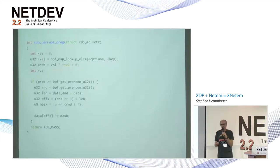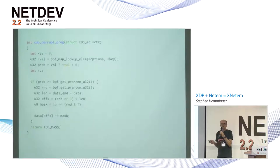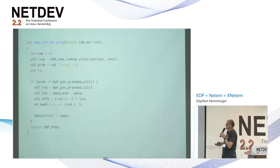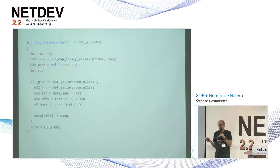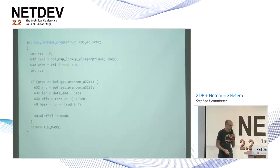How does corrupting work in XNet-EM? Basically, we do the same kind of map lookup to get the probability, and then if the probability is greater than a random value, we choose a bit somewhere in the packet at an offset and flip that bit. The example I was basing this on comes from XDP packet forwarding examples — we're just doing malicious packet modification instead.